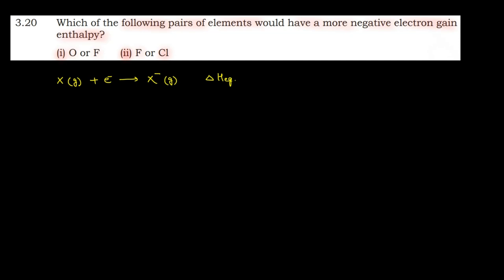Now let's come to the question. In the first part, we are given oxygen and fluorine. We need to find which of the two has a more negative electron gain enthalpy. Oxygen has atomic number 8, with electronic configuration 1s², 2s², 2p⁴. Fluorine has atomic number 9, with electronic configuration 1s², 2s², 2p⁵.